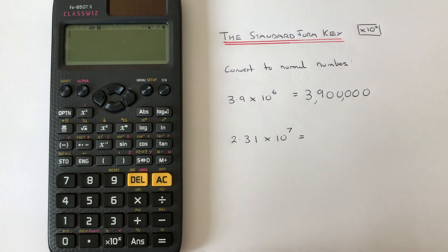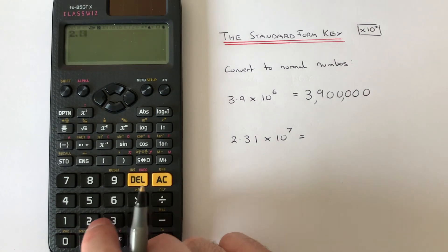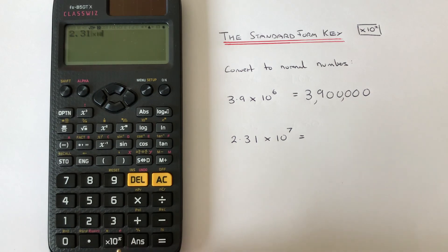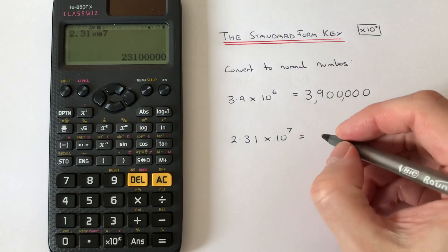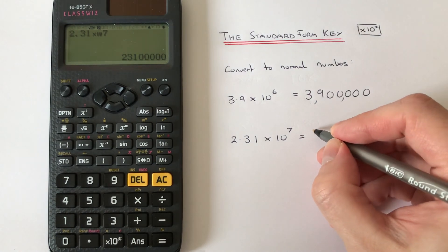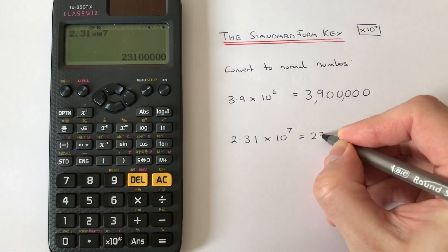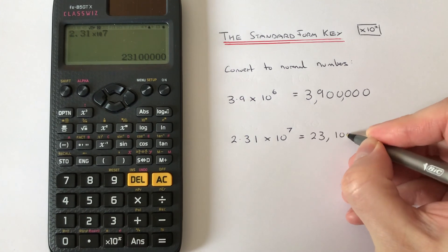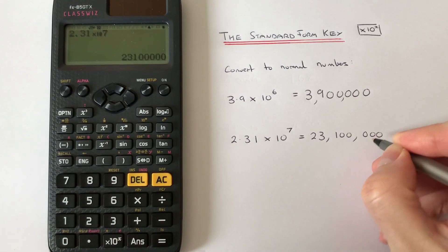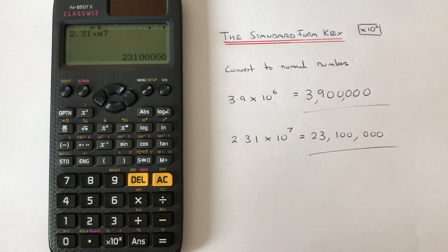We go 2.31, times 10, then press 7, and we get an answer of 23,100,000 - twenty-three million one hundred thousand. Thanks for watching guys, see you next time.